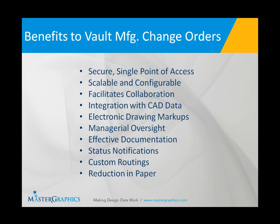Some of the benefits of an electronic change order process through Vault Manufacturing are that there's a secure single point of access. There aren't multiple applications needed to manage that change — there's one location that you log into with your credentials to get to that change order. Also, Vault Manufacturing is scalable, so depending on how small or large your organization is, you're going to be able to scale the types of features and the configuration of the product to your needs.